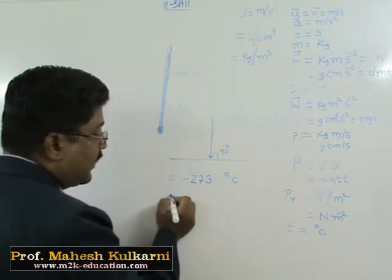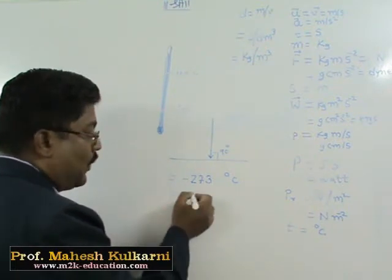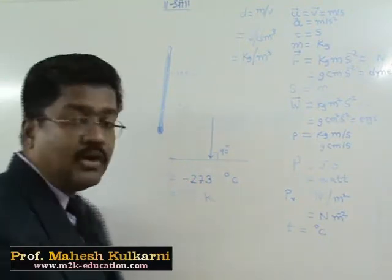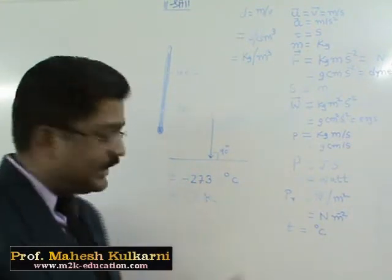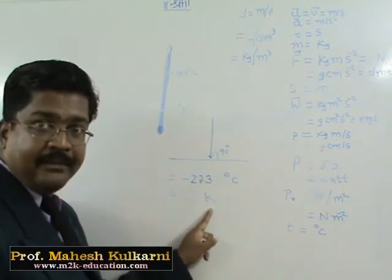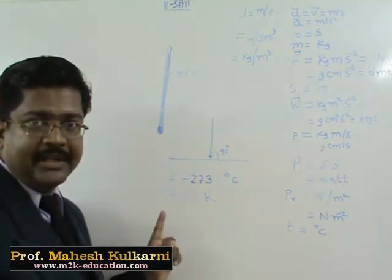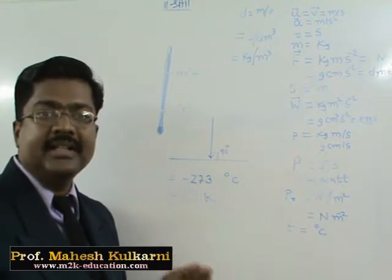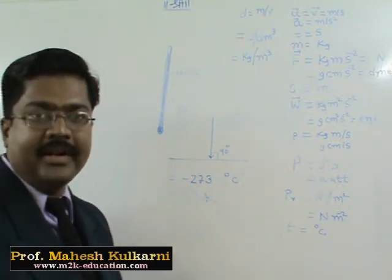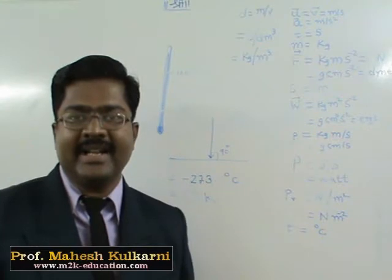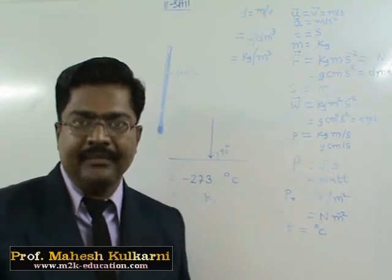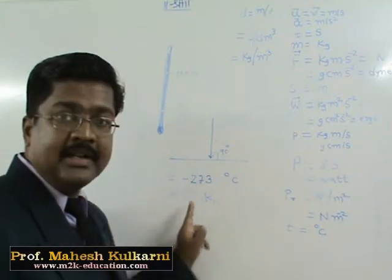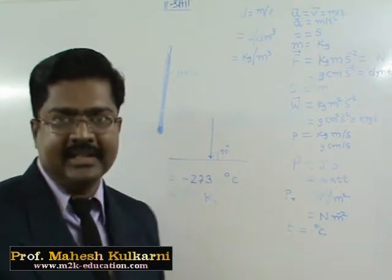So minimum possible temperature in this universe is minus 273 degree Celsius. That is equal to what we are calling as absolute zero. This is called as zero Kelvin. Don't read as degree Kelvin, okay? This is zero Kelvin. This is called as absolute temperature. This temperature scale never goes negative. So if anybody reports you that temperature is minus 10 Kelvin, that is wrong. Temperature, minimum possible temperature is zero Kelvin, that is equal to minus 273 degree Celsius.